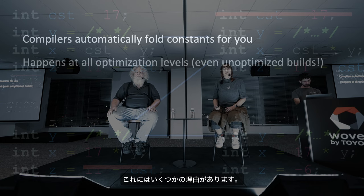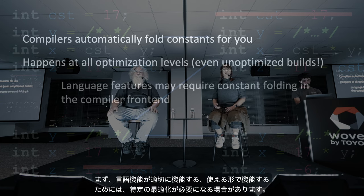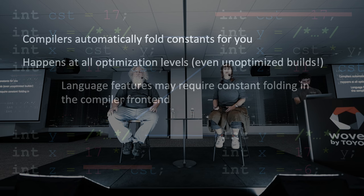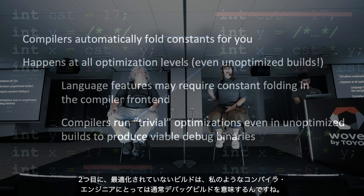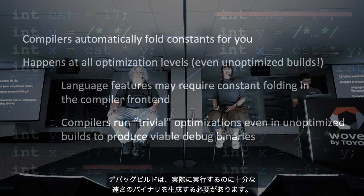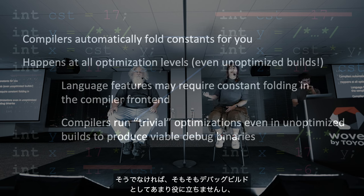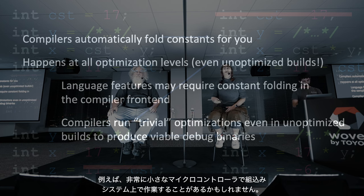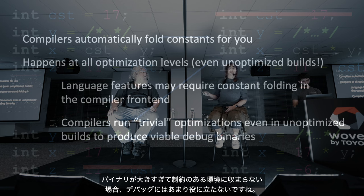There are a couple of reasons why constant folding happens even in debug builds. First, language features may require certain optimizations to function properly — the compiler may need to guarantee things like constant folding on certain language constructs. Second, unoptimized build usually means debug build to compiler engineers. Debug builds need to produce binaries that are fast enough to actually run, and small enough to execute in the environment — you could be working on an embedded system with a very small microcontroller where if the binary is too large it's not useful for debugging.